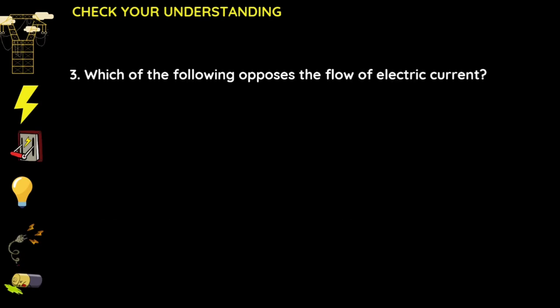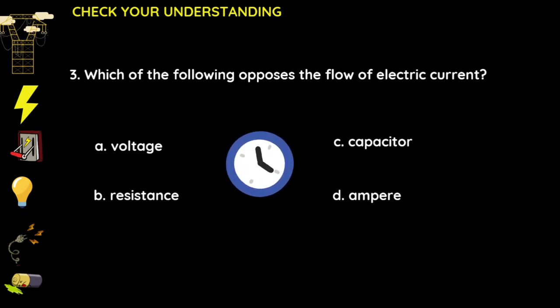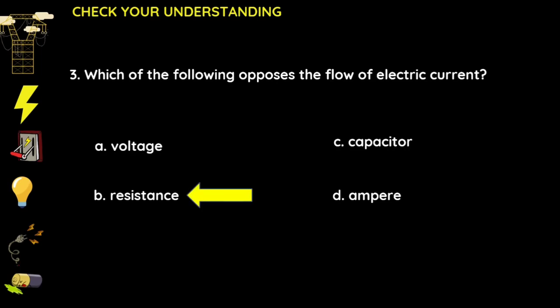For number three: which of the following opposes the flow of electric current? A) voltage, B) resistance, C) capacitor, D) ampere. If your answer is letter B, resistance, then your answer is correct.